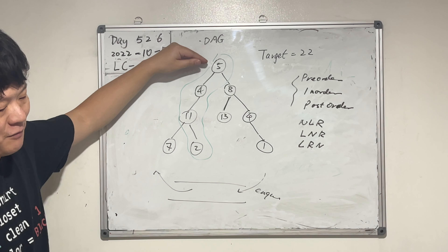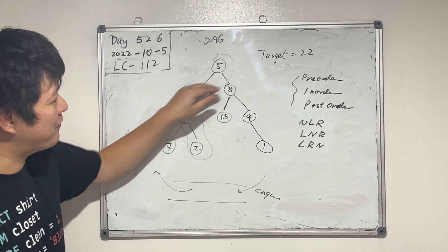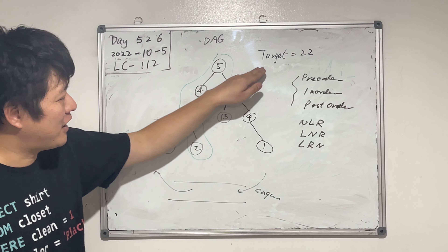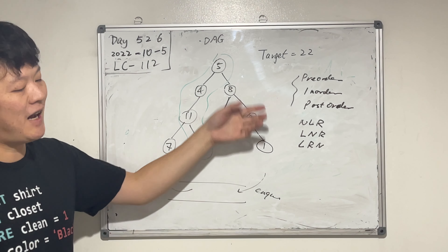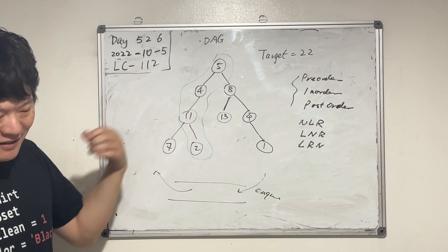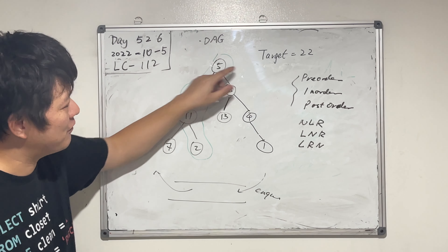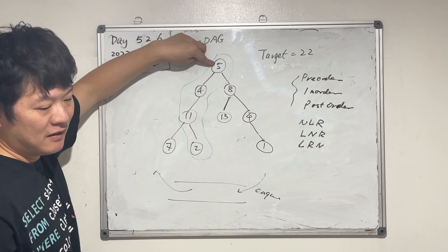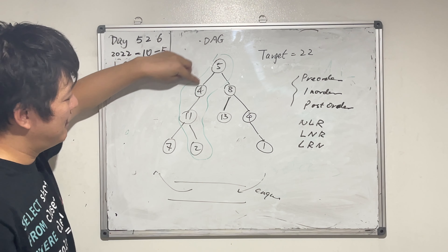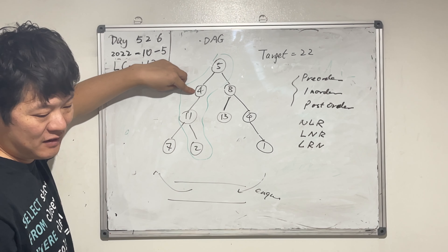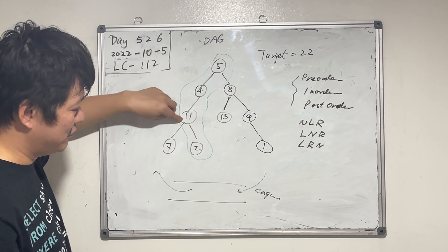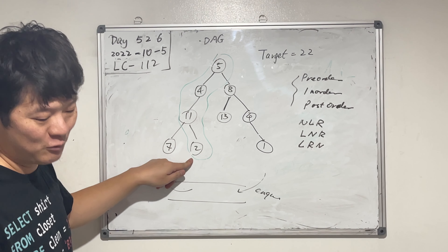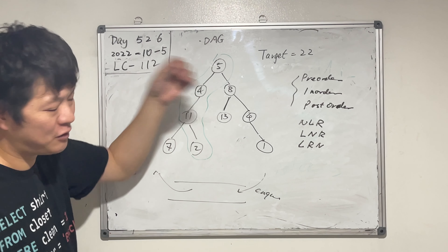We store the accumulation from the root to the current node to compare if it equals the target — 22 — and it also has to be a leaf node. The other way: instead of adding, we can subtract the node value from the target, and when we reach the leaf node it has to be zero. So 22, take 5 out is 17, take 4 out is 13, take 11 out is 2, take 2 out is zero — leaf node reached, sum is zero, path found!